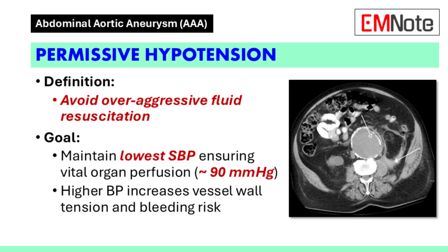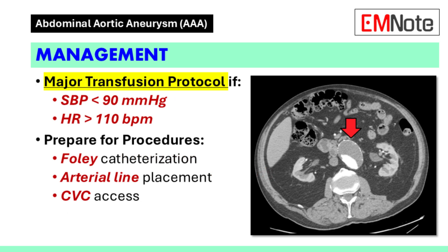Permissive hypotension is a strategy to avoid aggressive fluid resuscitation. The goal is to maintain the lowest systolic blood pressure that ensures vital organ perfusion, typically around 90 millimeters of mercury systolic. Aggressive fluid administration can exacerbate bleeding by increasing wall tension and vessel wall stress. Consider activating the major transfusion protocol if the systolic blood pressure falls below 90 millimeters of mercury or the heart rate exceeds 110 beats per minute. Prepare for urinary catheterization, arterial line placement, and central venous access.